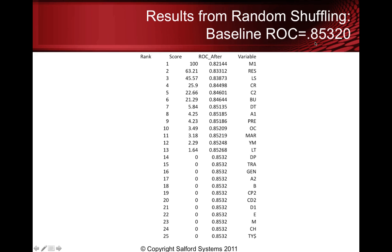Our baseline ROC was 0.85320. After shuffling M1 randomly, that fell to 0.821 — not terrible in isolation, but doing this with every variable shows how big the damage is. We lose the most when shuffling M1, second most when shuffling RES, and third most when shuffling LS. This is the same ranking of the top three variables obtained from the other two methods. This procedure is available in version 6.8 of SPM, currently in the non-GUI version: save the tree, specify the data set to score, request 'var imp equals yes,' indicate the number of random shuffles per variable, and the reports will be generated in the classic output.